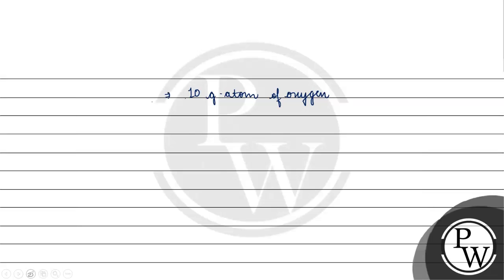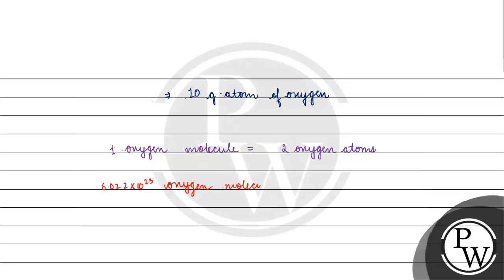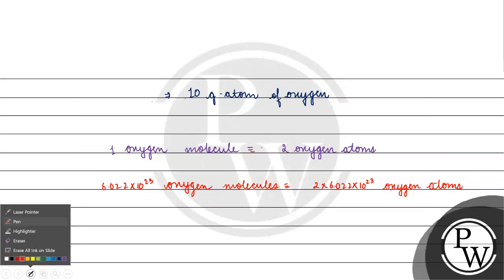Now, to convert from atoms to molecules, we know that 1 oxygen molecule has 2 oxygen atoms. So 6.022 × 10²³ oxygen molecules would contain 2 × 6.022 × 10²³ oxygen atoms.